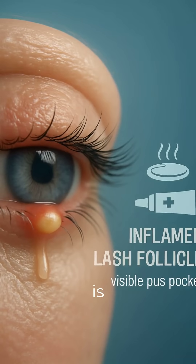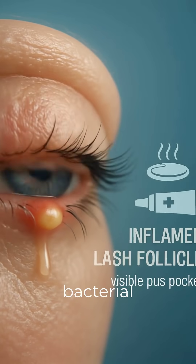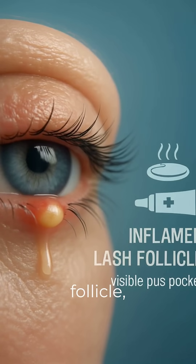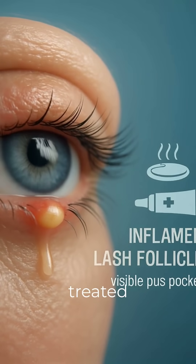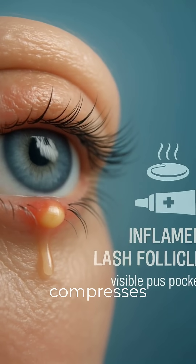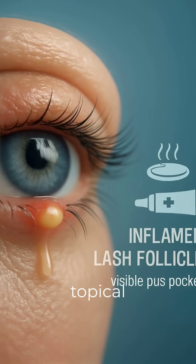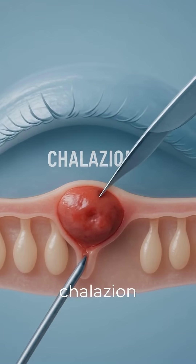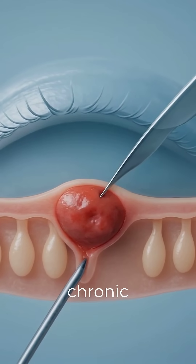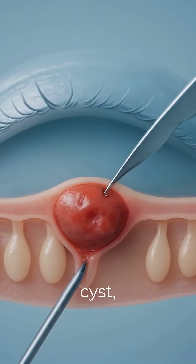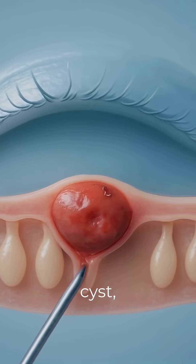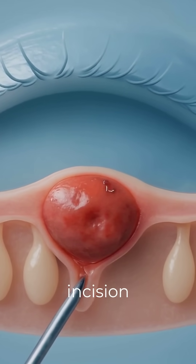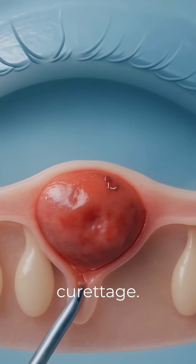A stye is an acute bacterial infection of a lash follicle, treated with hot compresses and topical antibiotics. A chalazion is a chronic meibomian cyst, requiring incision and curettage.